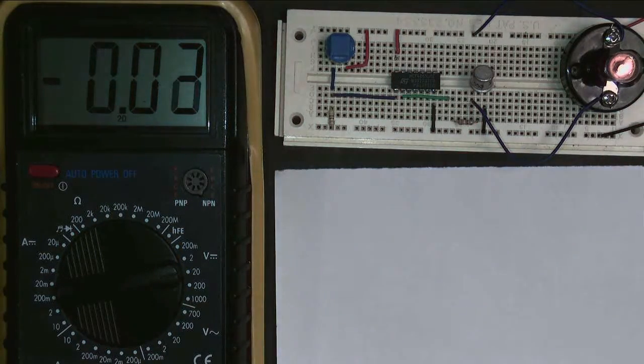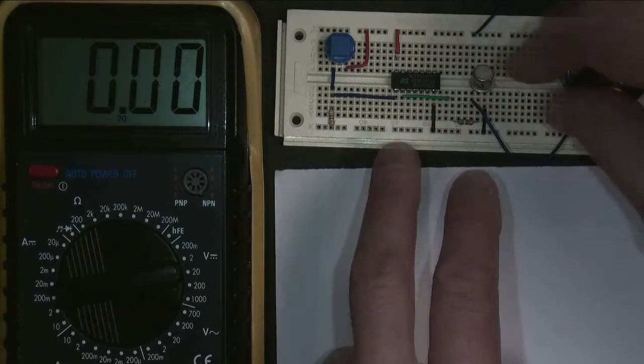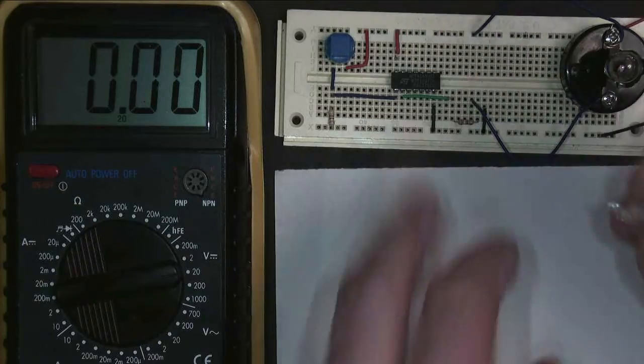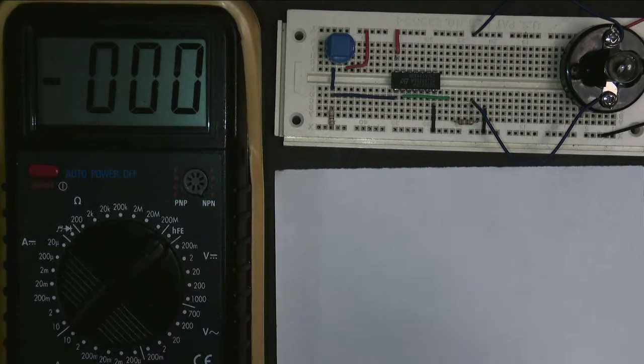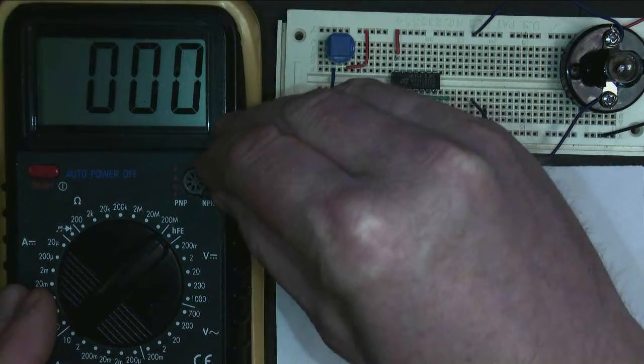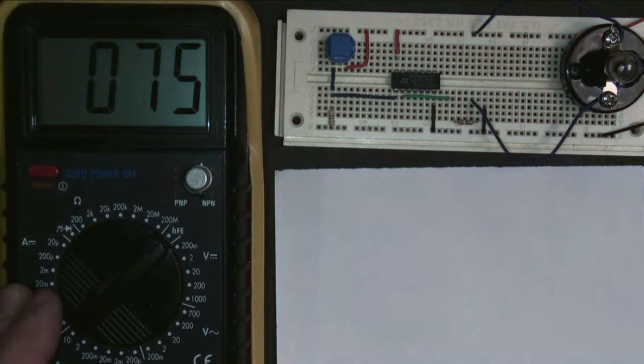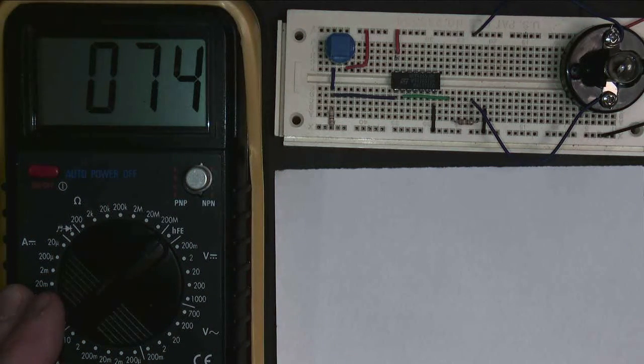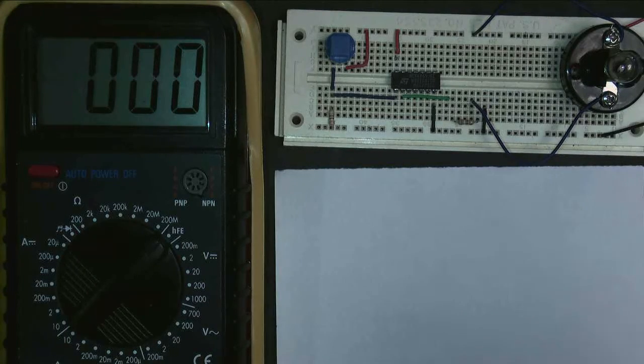And the final thing we need to measure is the gain of the transistor. The easiest way to do this is to just use our multimeter. So I connect it to this function here. Connect my transistor into the correct measuring space. Plug it in. And it has a gain of 75. Plug it back in our circuit.